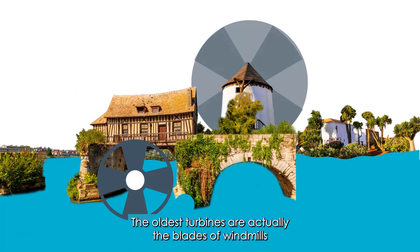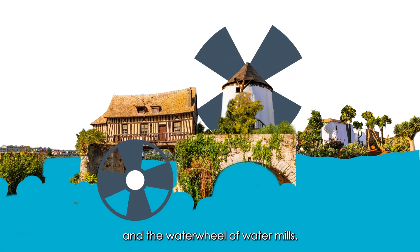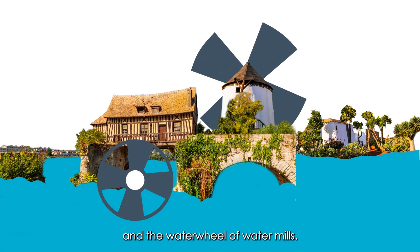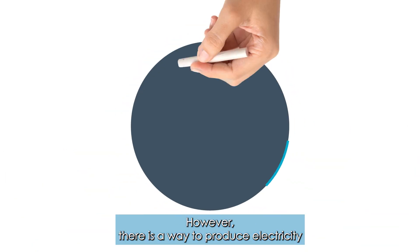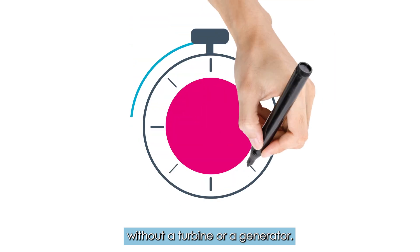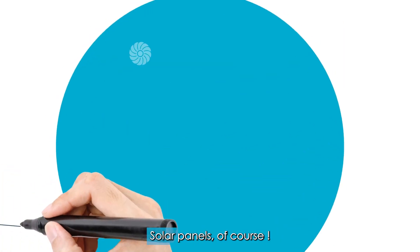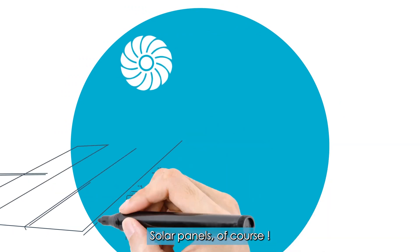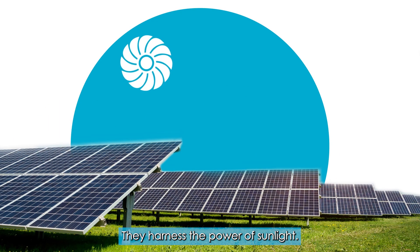The oldest turbines are actually the blades of windmills and the waterwheel of watermills. However, there is a way to produce electricity without a turbine or a generator. Can you figure out what it is? Solar panels, of course — they harness the power of sunlight.